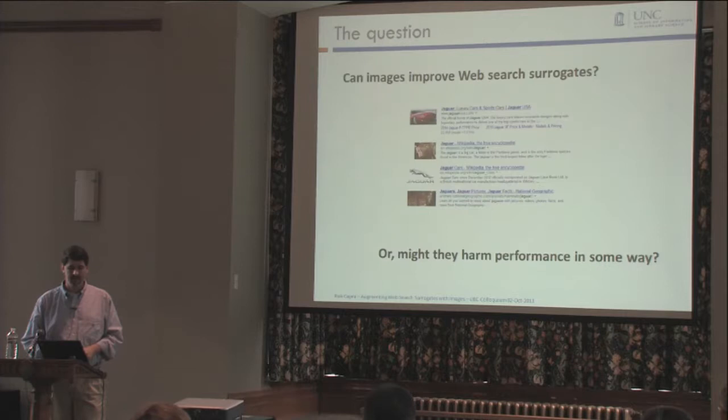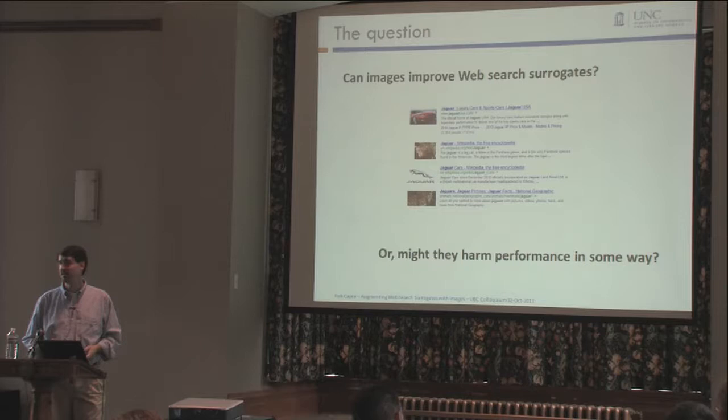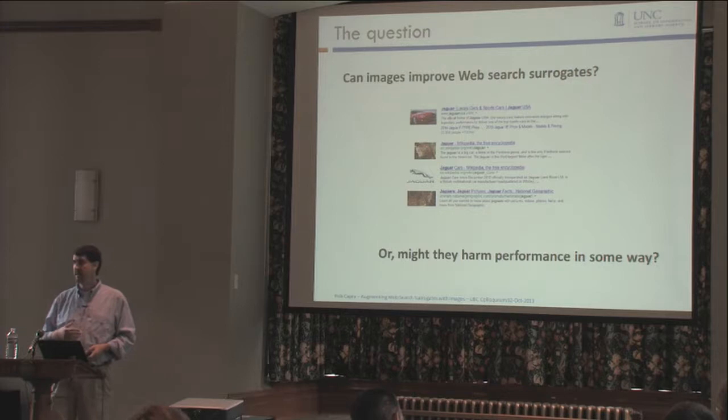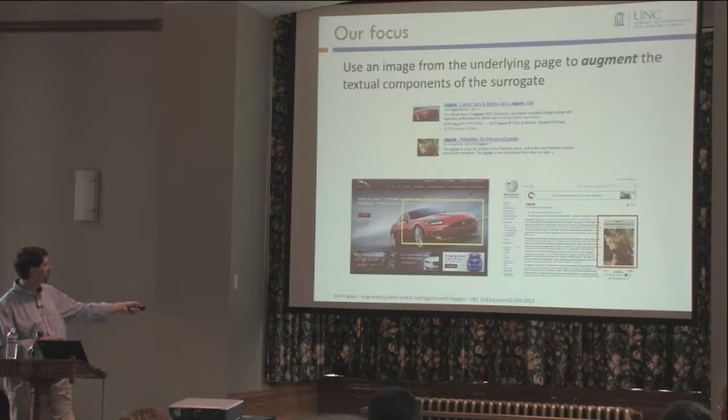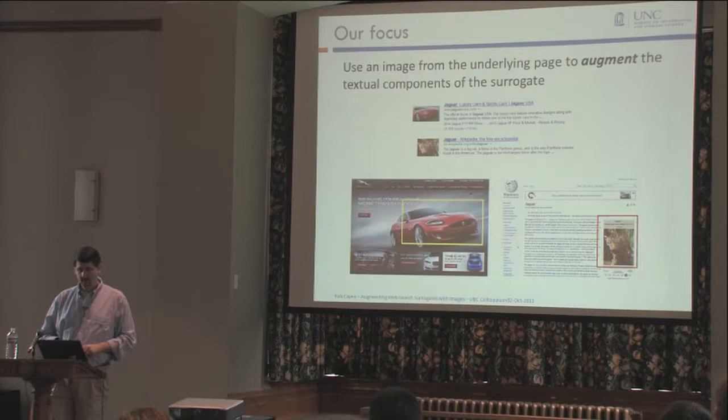The question again is: can we improve things by putting images next to the results? But we have to be open to the idea that images might actually hurt in some way — they might slow people down because they get caught up looking at them, or the images might convey the wrong information. So our focus is taking one image from the underlying web page and putting it next to the results in addition to the textual components.